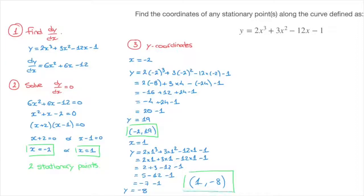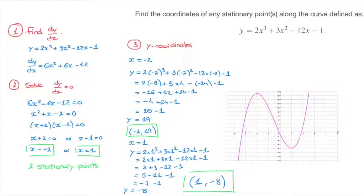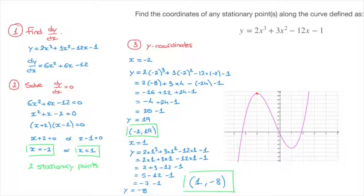We now know the coordinates of both stationary points. Confirming with the curve, we can see clearly it has a local maximum at (−2, 19) and a local minimum at (1, −8). At both stationary points, dy/dx equals zero and the tangent to the curve is horizontal. That's how we find the coordinates of stationary points along a curve's length using the derivative.